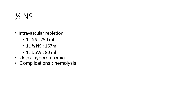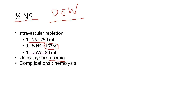On the other end of the spectrum from 3% hypertonic saline, we have half NS, which is hypotonic and really used for hypernatremia. Comparing intravascular retention: one liter of NS keeps 250 mils intravascular, one liter of D5W keeps about 80 mils, and half NS keeps about 167 mils intravascular. Compared to D5W for hypernatremia, the advantage of half NS is that more stays intravascular, so you also get some volume repletion. It can even be used for maintenance fluids in someone mildly hypernatremic.